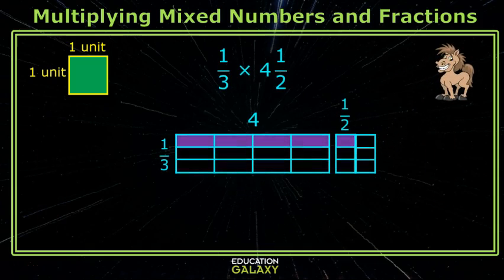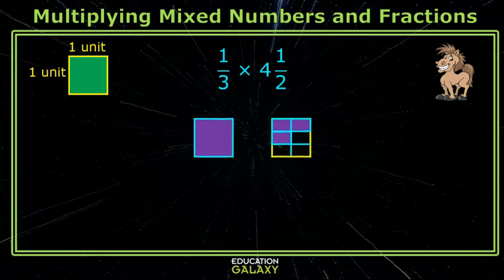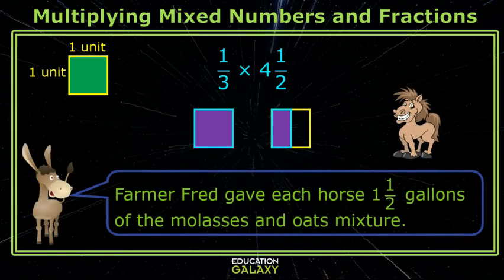And then I simplify by putting the parts together. So each horse gets one and three-sixths gallons. That's right, but keep simplifying. Hmm. Oh, three-sixths is a half.